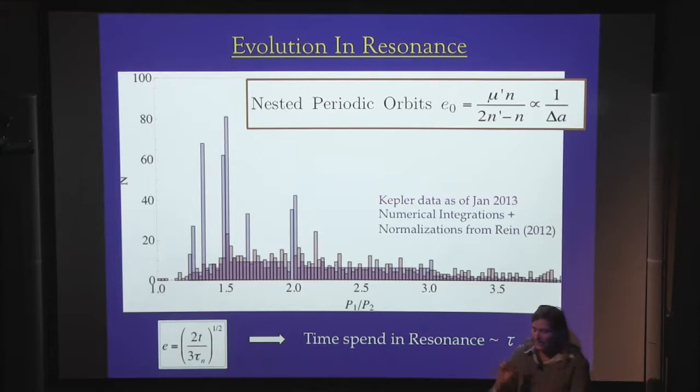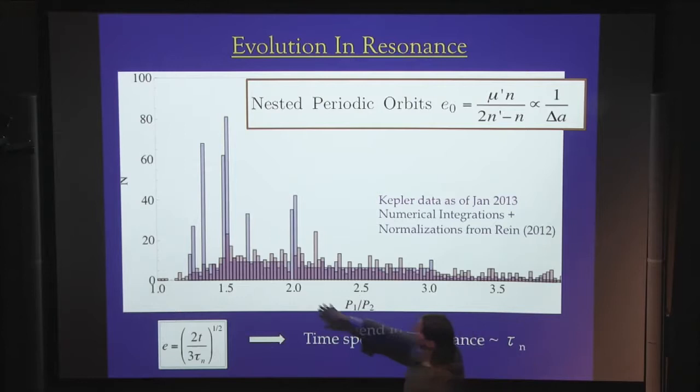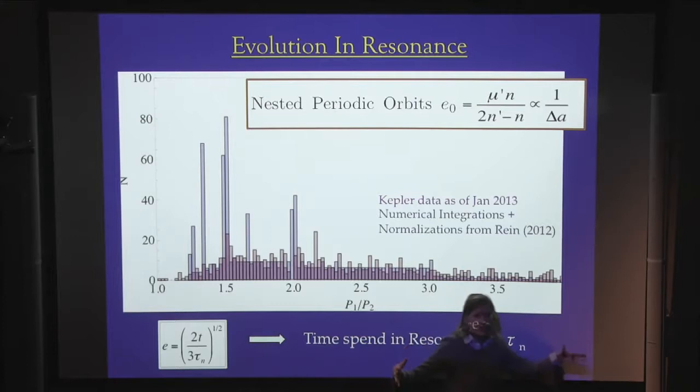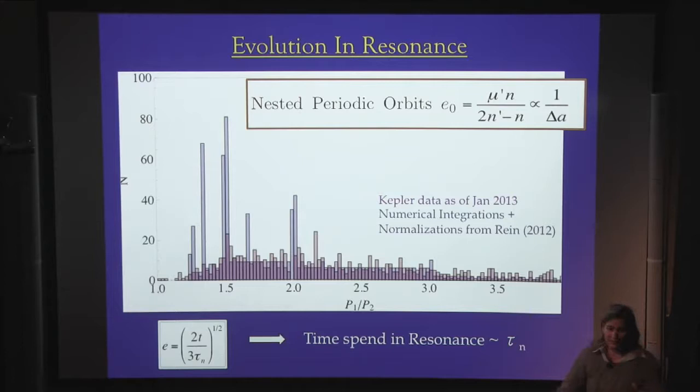Numerically, I assembled large planetary systems and let them migrate relative to one another — they were beautifully caught in resonances, producing these large peaks. You can see roughly that the area in these peaks is more or less equivalent to all those little wiggles elsewhere. So overall, if I look at a large number of planetary systems, I should see roughly equal numbers of planets in resonance compared to out of resonance, if migration was important in their formation.